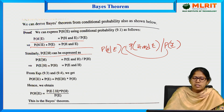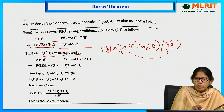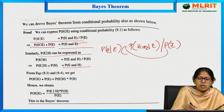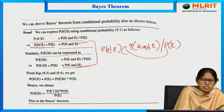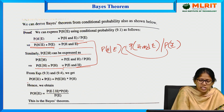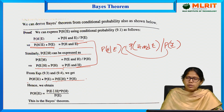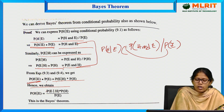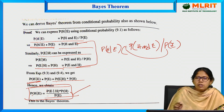Similarly, we write the formula for probability of E given H: probability of E given H, multiplied by probability of H, equals probability of E and H. Since probability of H and E and probability of E and H are equal, we equate the two expressions. Then: probability of H given E into probability of E equals probability of E given H into probability of H divided by probability of E. This is the formula for Bayes' theorem.